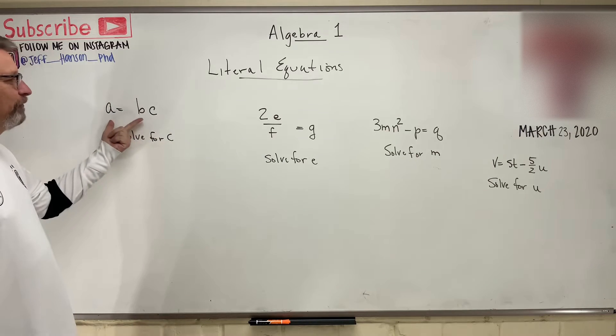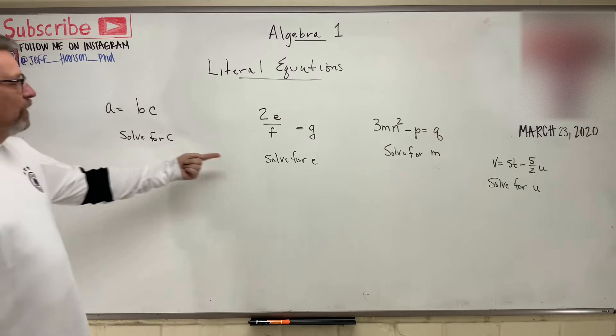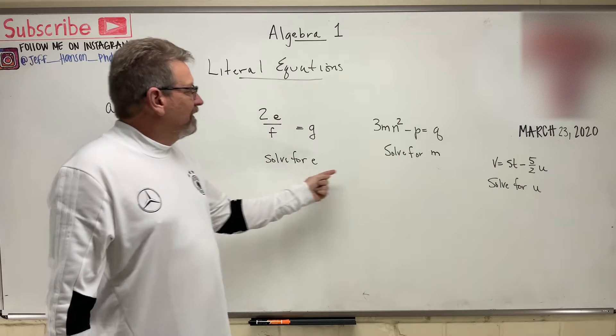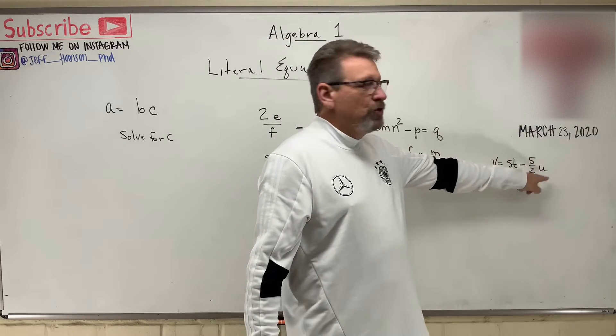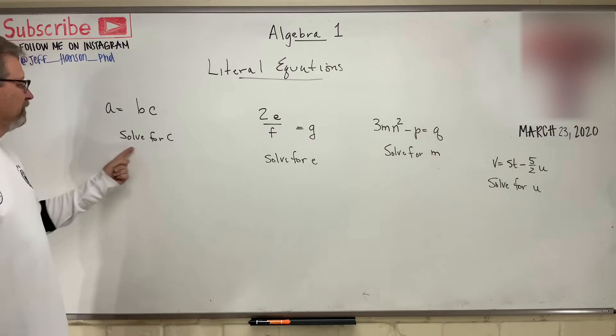We're asked to solve for only one of the variables. This one we're going to solve for C. Over here we're going to solve for that E. Over here we'll solve for M. And then over here we're going to solve for U. What does that mean? Solve for.